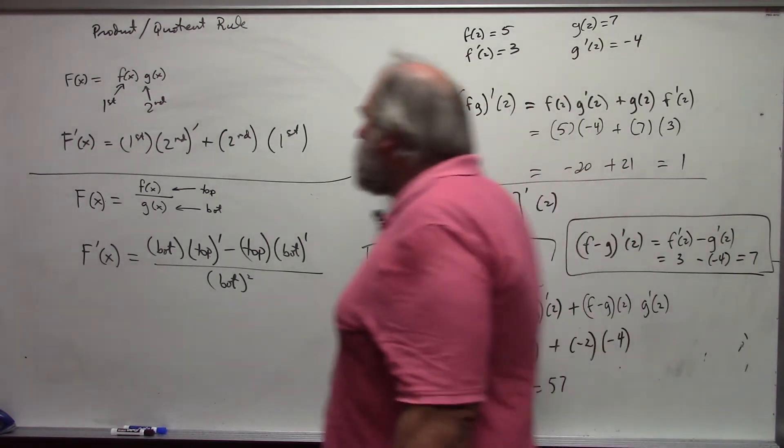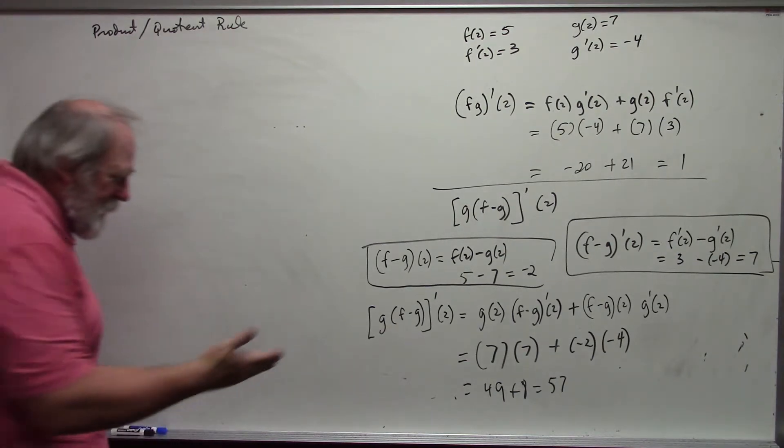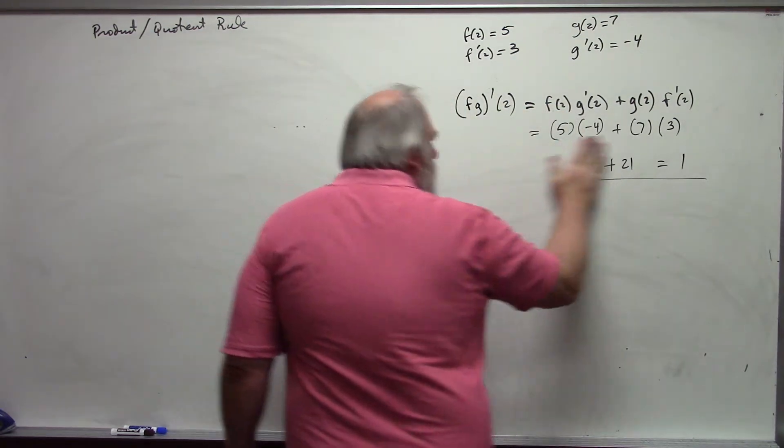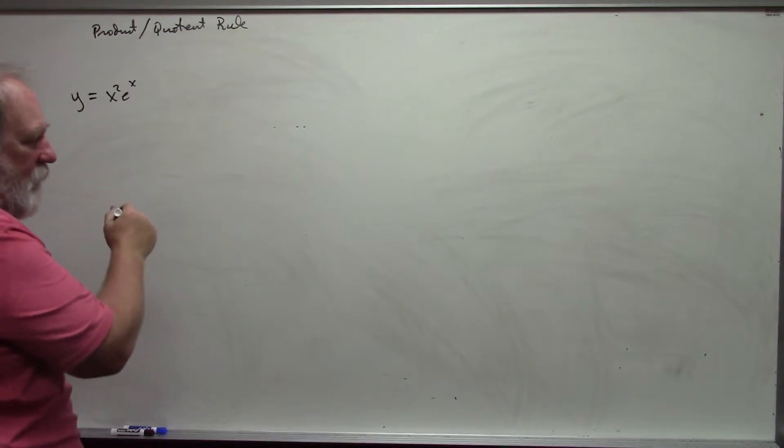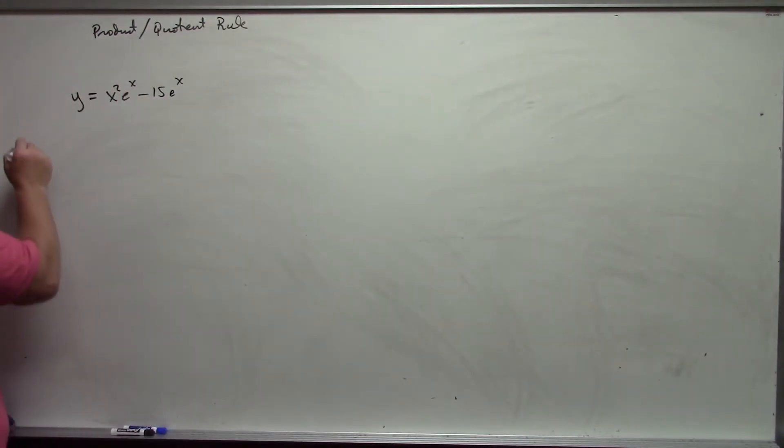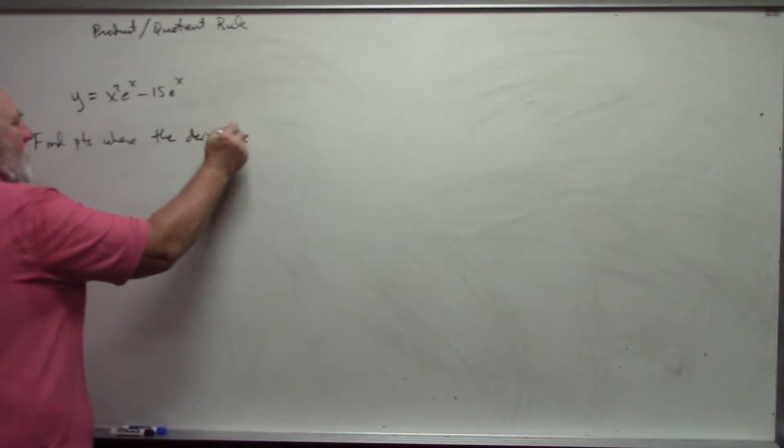Let's look at another example here. Suppose I have the following. Y equals x squared e to the x minus 15 e to the x. And I want to know, find points where the derivative is 0.